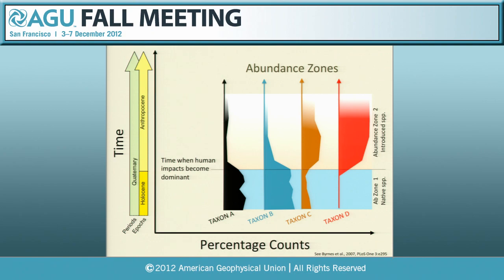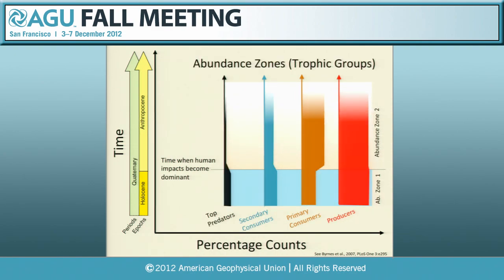Abundance zones — you can apply the same concept: thinking about introduced versus native taxa in any one place, pre-human impact mostly native taxa, post-human impact increasing abundances of introduced taxa. A really interesting way to think about this is also dividing species into different trophic groups — top predators, secondary consumers, primary consumers, and producers. What you find, particularly in marine ecosystems and in the near-shore fauna, is that as you get introduction of species, you lose a lot of top predators and you increase the number of species in the primary consumer group. Those are some fairly concrete criteria, and that's not happening in the future — that has happened already.